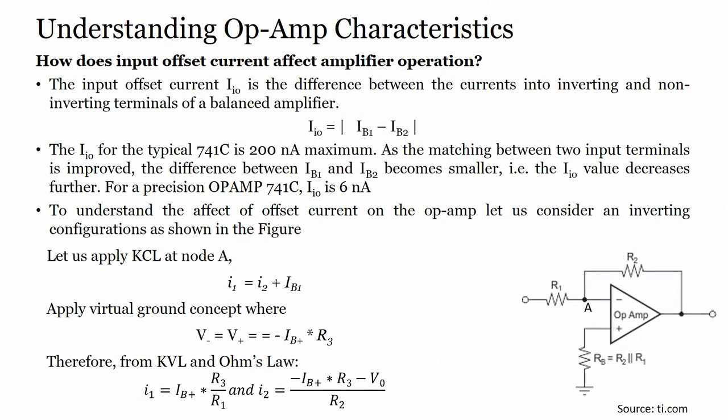Now let us see how this is going to affect the amplifier operation. From the slide, the input offset current for a typical 741 is 200 nanoamperes maximum. As matching between the two input terminals improves, the difference between IB1 and IB2 becomes smaller. For a precision op-amp, the input offset current is as low as 6 nanoamperes.